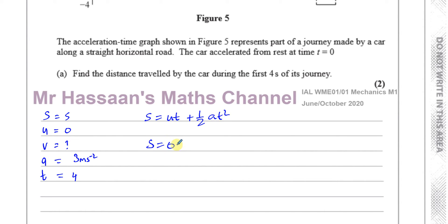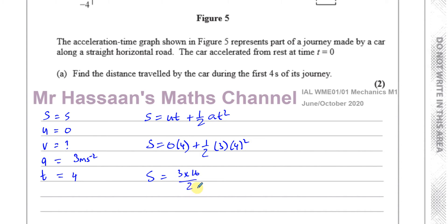So we have u equals 0, t equals 4, which makes the first term 0. Then it's one-half times a, which is 3, times t squared, which is 4 squared. That's one-half times 3 times 16, giving 3 times 8, which is 24 metres. So s equals 24 metres. That's one method.